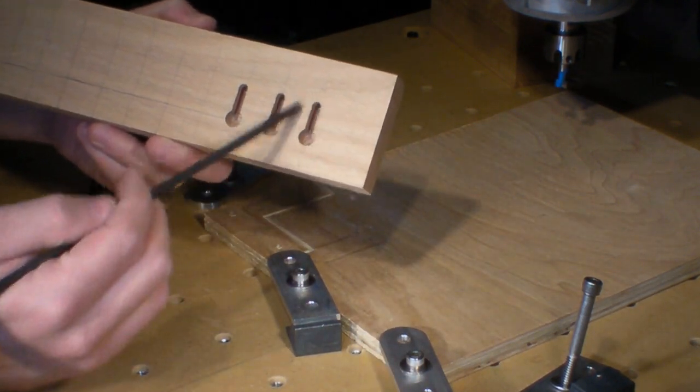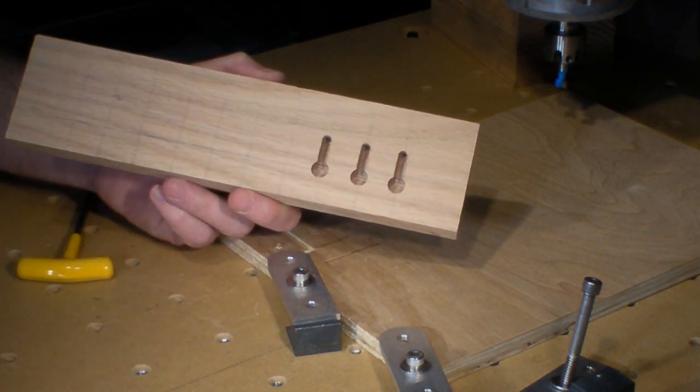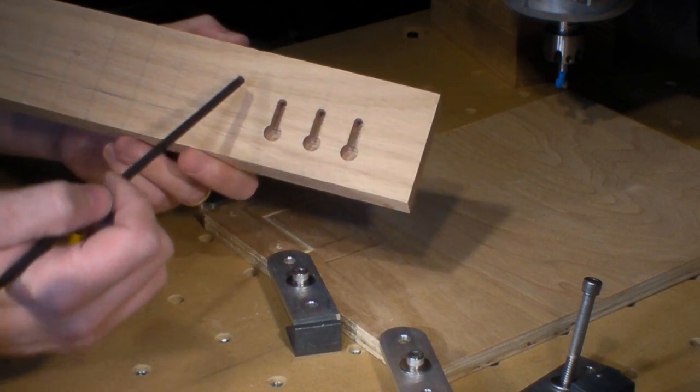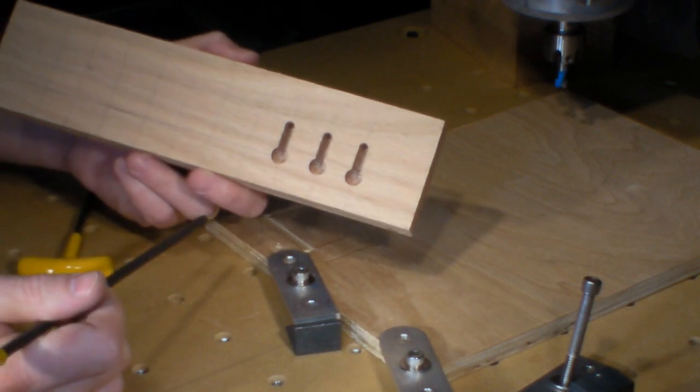You can actually buy metal inserts that allow you to do the same thing. But again, you have to pocket out the back of it, usually with a router bit or a chisel, to give a recess for that flat piece to be screwed into the back flush. And then you have to set it with two screws usually.